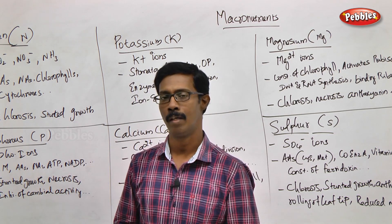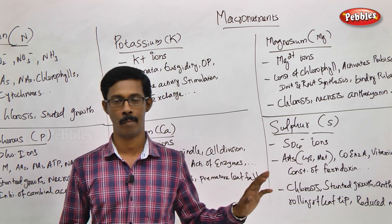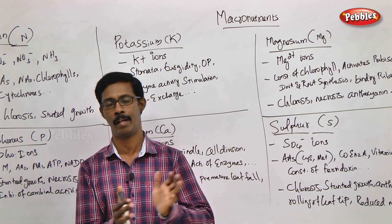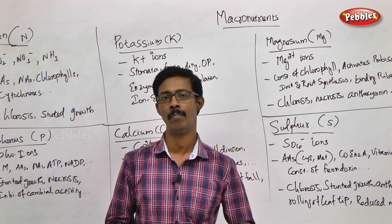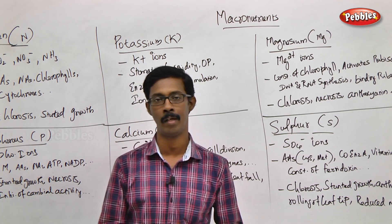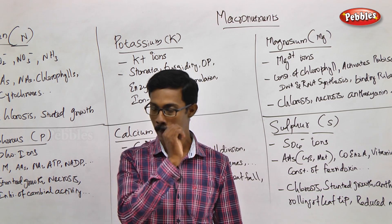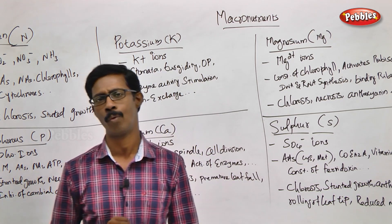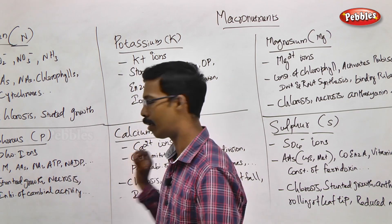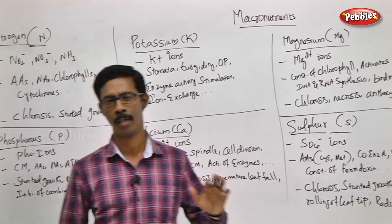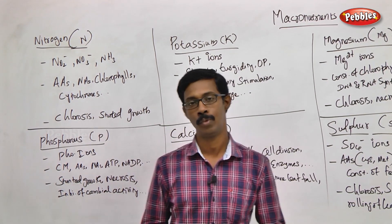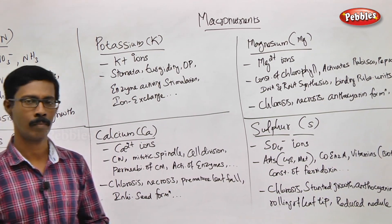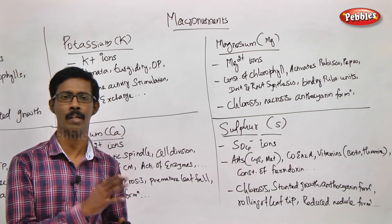First, macro nutrients. We are talking about macro minerals, or macro nutrients, in comparatively higher concentrations. The macro minerals we will memorize are: phosphorus, magnesium, sulphur, calcium, and potassium.